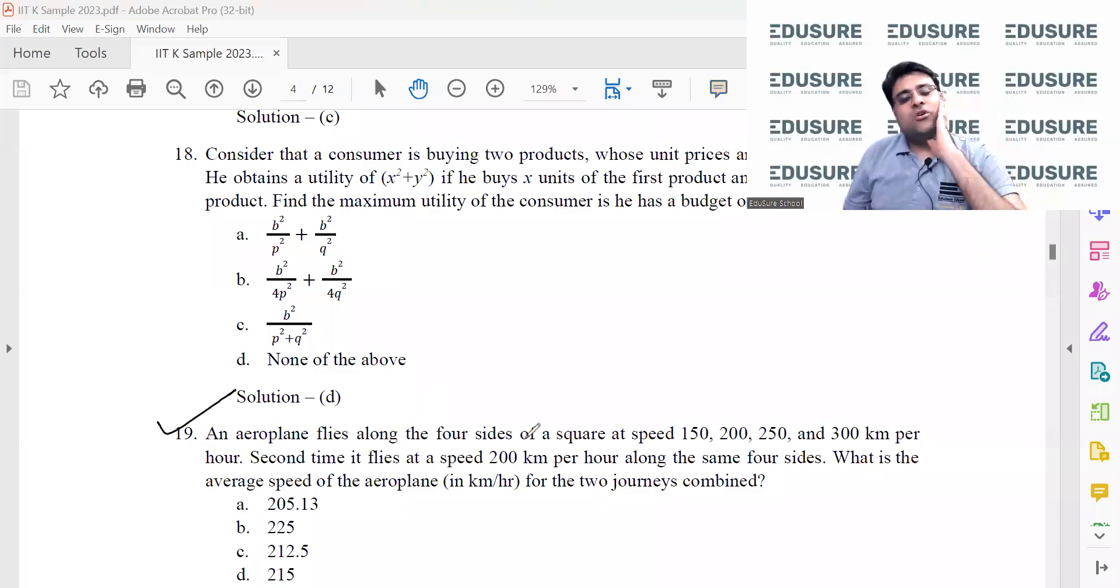Problem 19: An aeroplane flies along the four sides of a square at speeds 150, 200, 250, and 300 km per hour. Second time it flies at 200 kilometer per hour along the same four sides. What is the average speed of the aeroplane for the two journeys combined? Two ways to think about it. One, if you already know that average speed is calculated by harmonic mean, just do it.